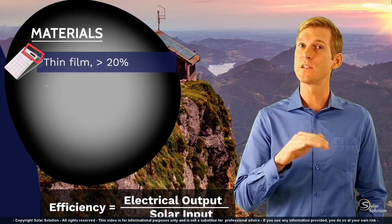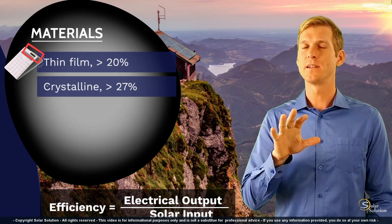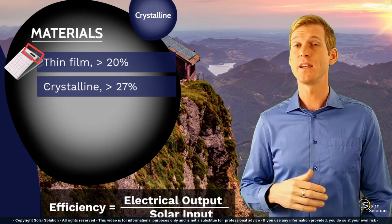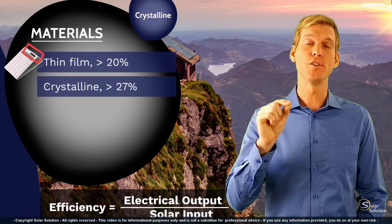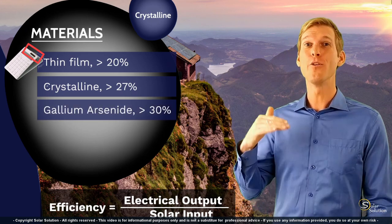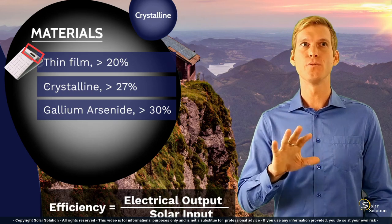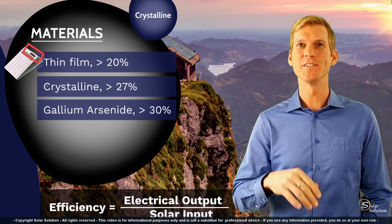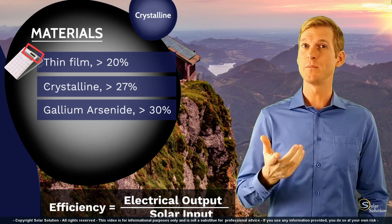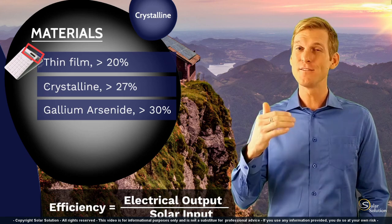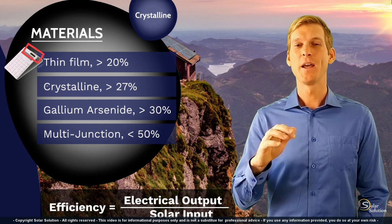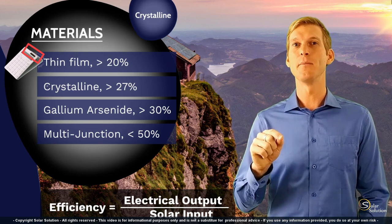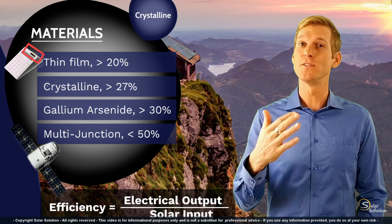Besides thin film, there's also crystalline material, which gives a higher overall efficiency — just over 27%. You can go even higher with gallium arsenide, which can exceed 30%, but it's normally only used for special projects like solar race cars or solar planes — great material but very expensive. If you want even higher efficiency, multi-junction solar cells can reach up to 50%, which is amazing, but they're extremely expensive and typically only seen in applications like satellites where the higher cost is warranted.